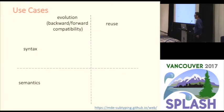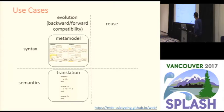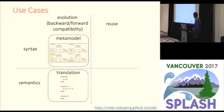There are a number of use cases in which this can be very useful. For example, when we are talking about different versions of the same metamodel — we may have different versions of the same state machine metamodel — and we want to ensure forward and backward compatibility of the operations defined for the language. We may have a translational semantics implemented with code generators for version one of the metamodel.